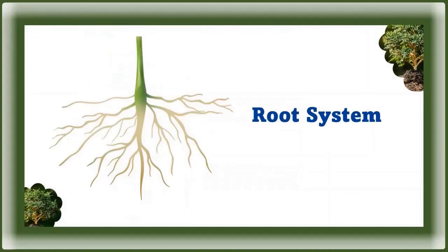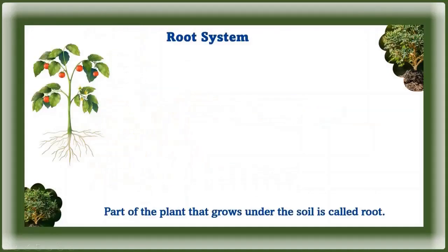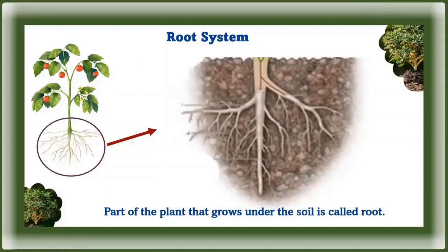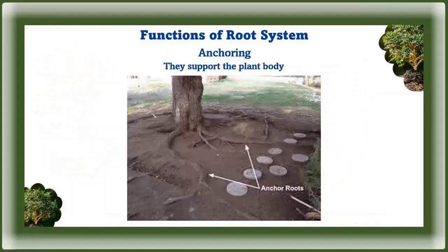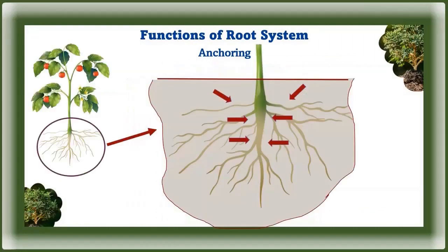Now we're going to look at the root system. The part of the plant that grows under the soil is called the root. This part is mainly responsible for anchoring the plant into the ground and absorbing essential mineral elements, nutrition, and water from the soil. It is also used to store food.